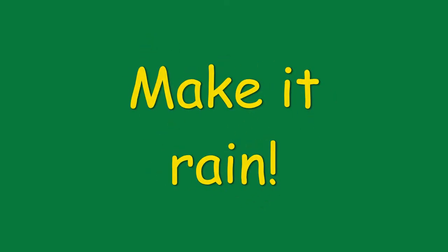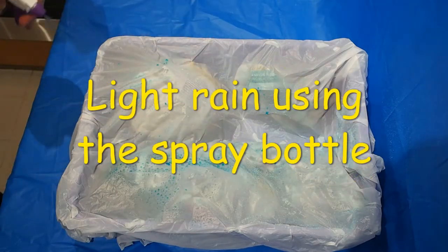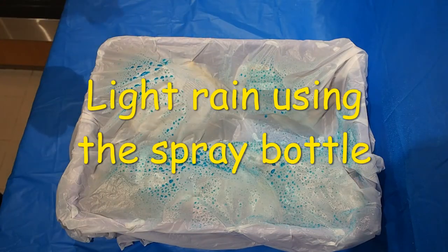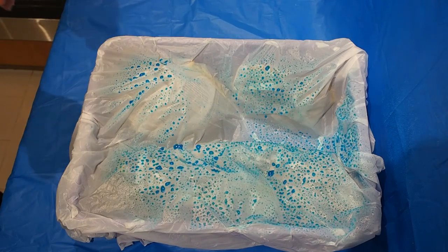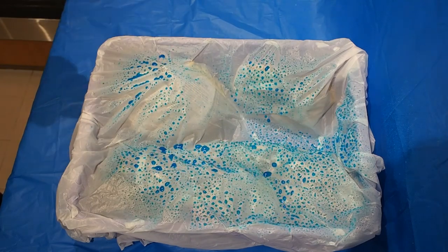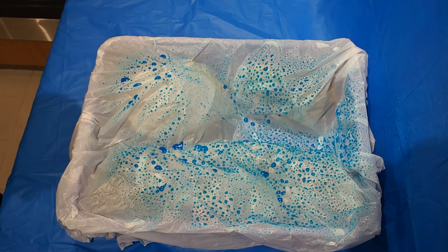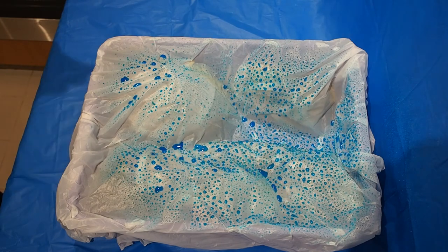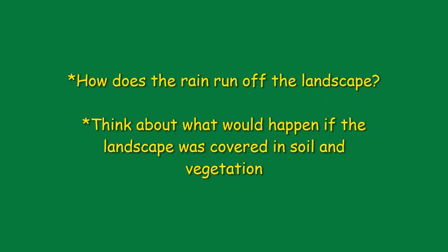The next step is to simulate some different amounts of rainfall. Add some water and a few drops of food colouring into your spray bottle, adjusting the nozzle to give a fine spray which represents light rain. Spray the landscape you've made in the tray, making sure to cover all of the area. What do you notice about how the rain runs off the landscape? Think about what would happen if the landscape was covered in soil and vegetation instead of being plastic.